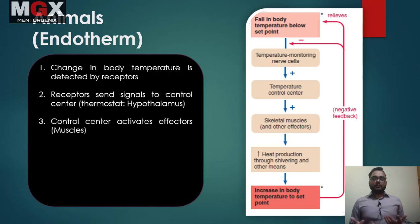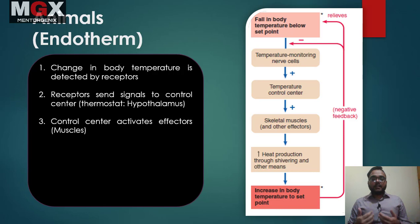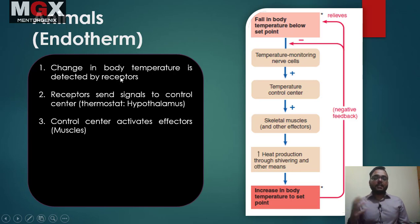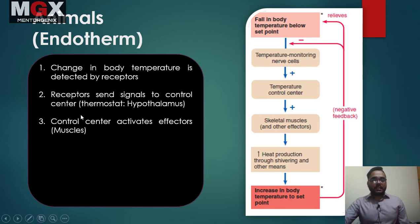There are three types of animals: endotherm, heterotherm, and ectotherm — which can regulate metabolism. The body temperature changes accordingly. Receptors in the body — thermoreceptors — detect these changes and send signals. The thermal control center, the thermostat, is located in the brain.